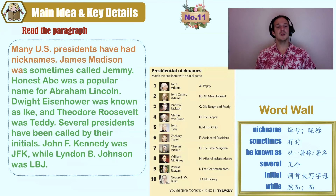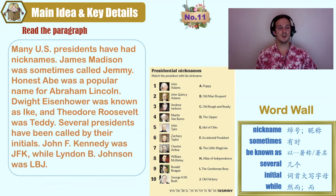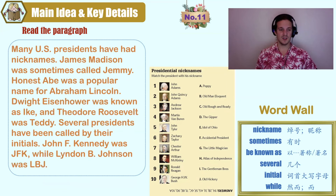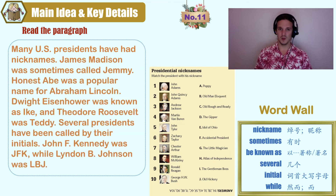Many U.S. presidents have had nicknames. James Madison was sometimes called Jemmy. Honest Abe was a popular name for Abraham Lincoln. Dwight Eisenhower was known as Ike, and Theodore Roosevelt was Teddy. Several presidents have been called by their initials — John F. Kennedy was JFK, while Lyndon B. Johnson was LBJ.